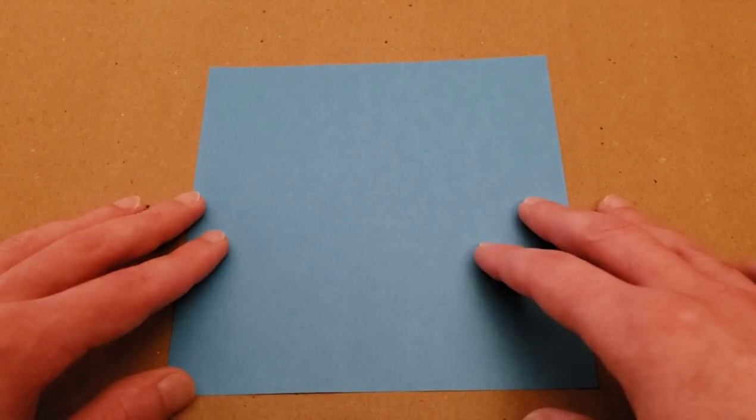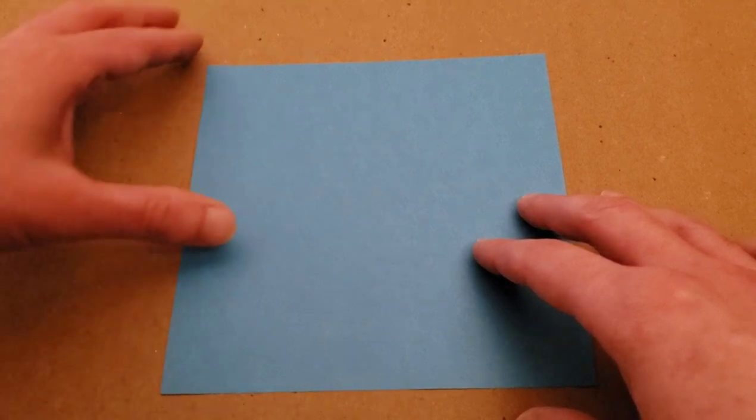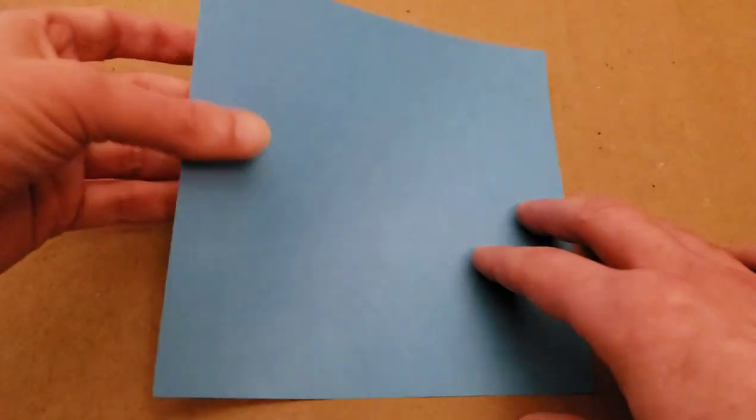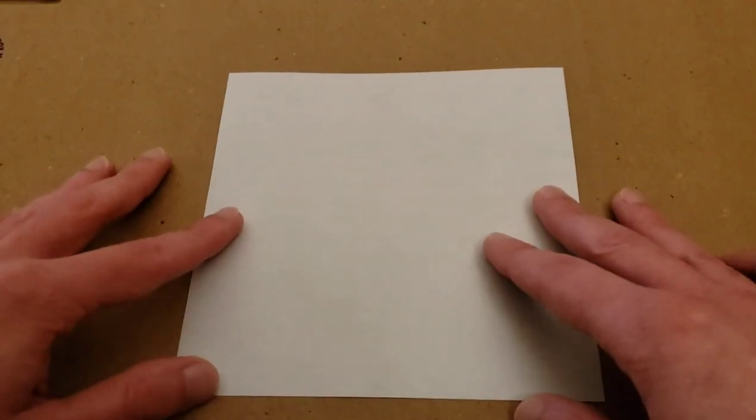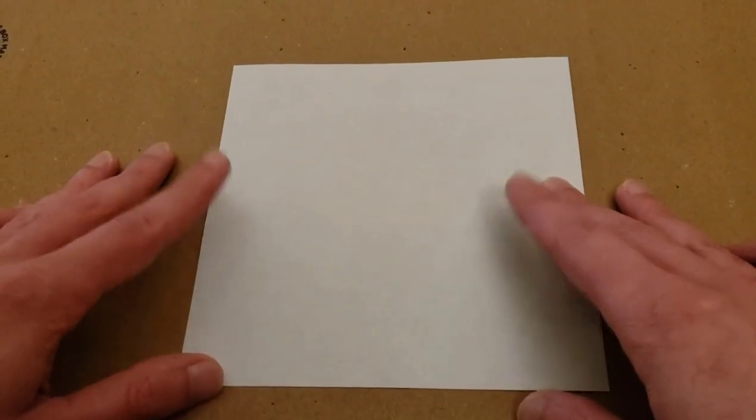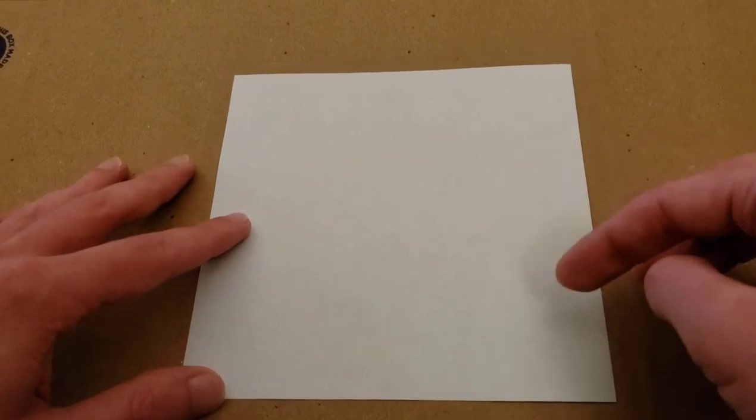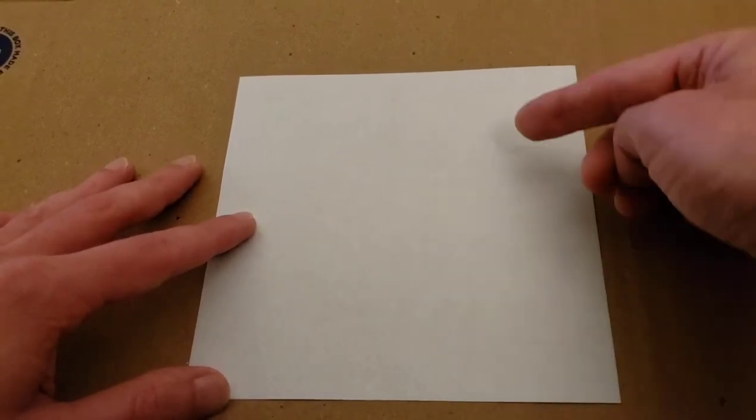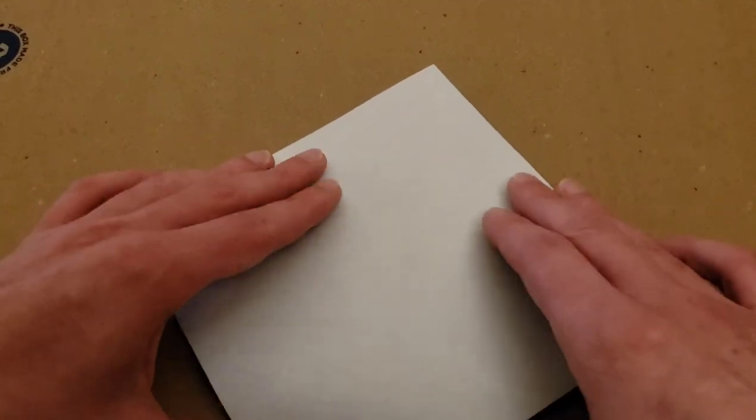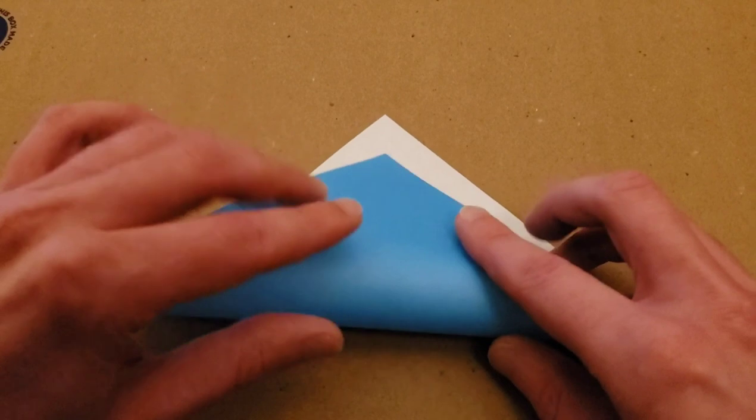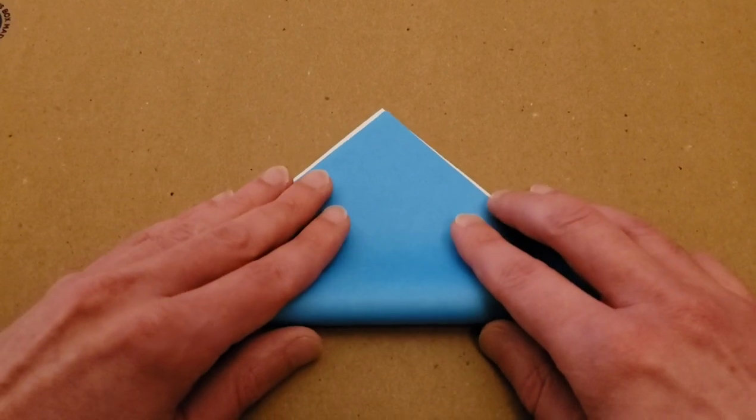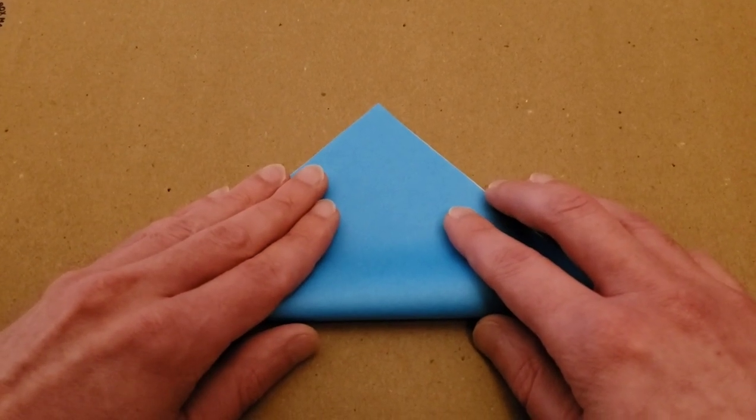Alright, so to begin with, I've got my paper here, and I'm going to start with the colored side facing down. And just like we've done in some of our previous videos, we need to make a base. Well, instead of folding it into a rectangle to start with, we're going to start by folding it into a triangle to start with, because this is going to be a different kind of base.